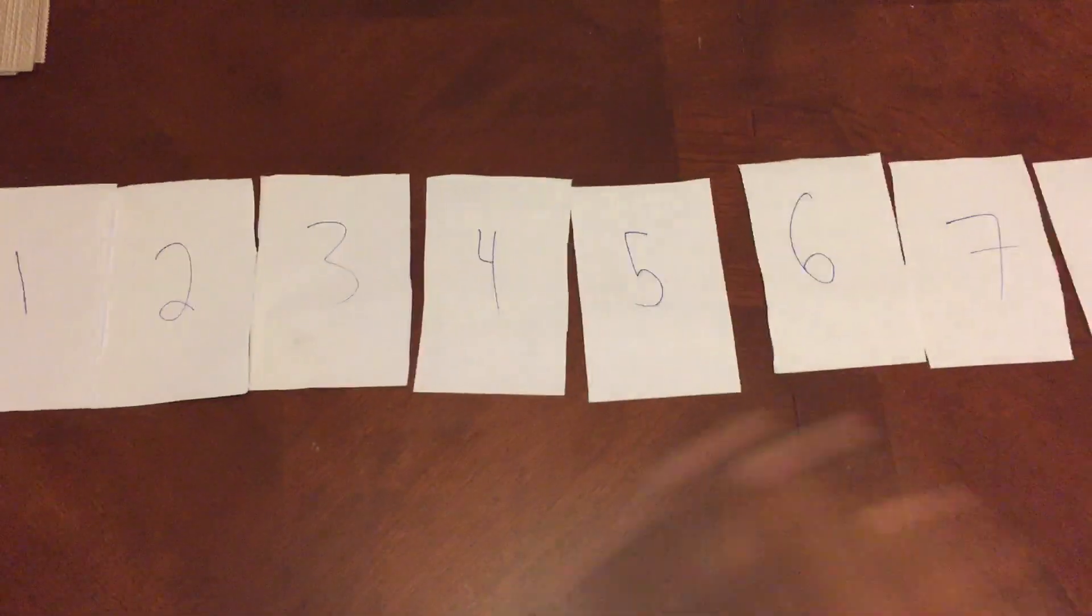The first thing I'm going to do is divide this array in half. Five, six, seven, eight become their own little array, and one, two, three, four become their own little array.